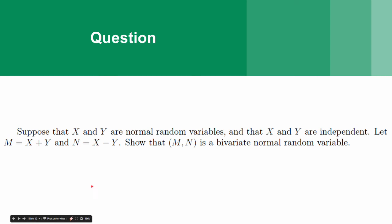Now for a question. Suppose that x and y are normal random variables, and that x and y are independent. Let m equal x plus y, and n equal x minus y. Show that m, n, the bivariate random variable, is a bivariate normal random variable.